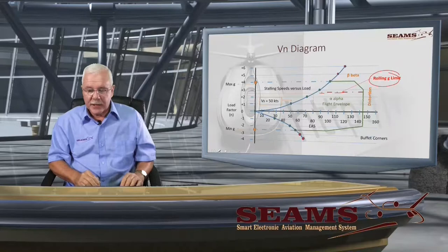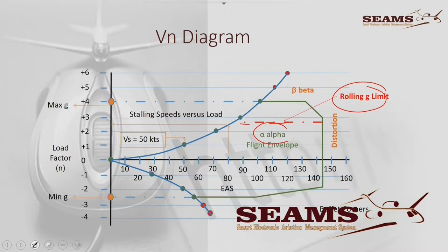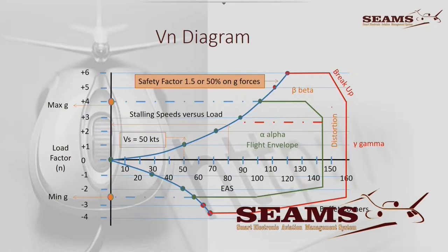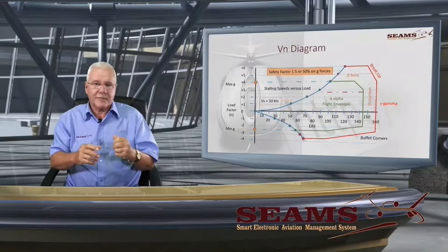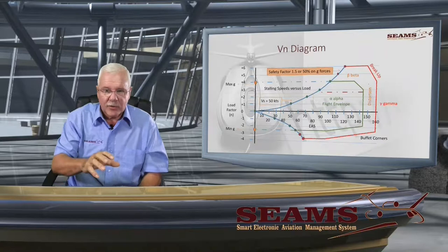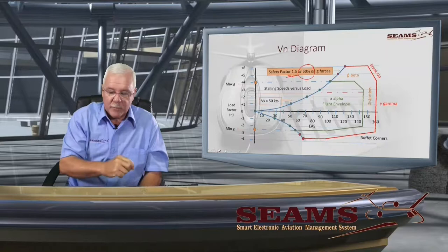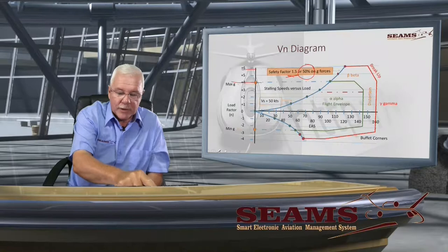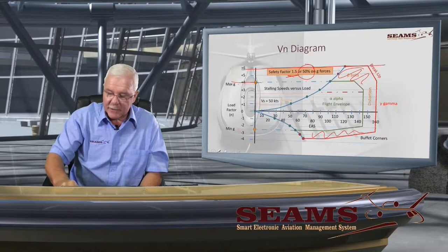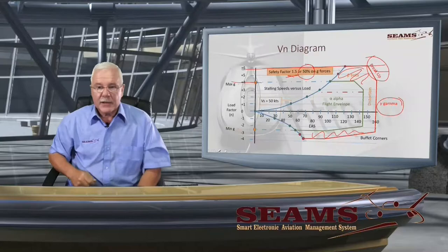Outside the flight envelope you go into the beta range — it's just the Greek alpha, beta, gamma. The beta range is where you get distortion. In design, they use what I loosely call the fudge factor. The safety margin is 50%, or a factor of 1.5. In other words, if the maximum G is 4G, then 1.5 times 4 is 6G. Anything in the beta range, you're going to get distortion. Anything beyond that, into the gamma range, you're going to get breakup.